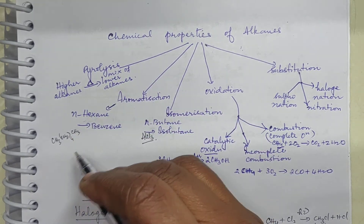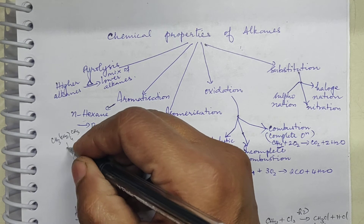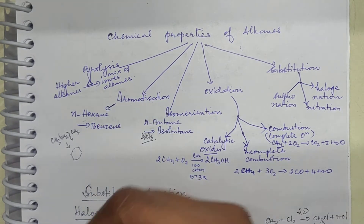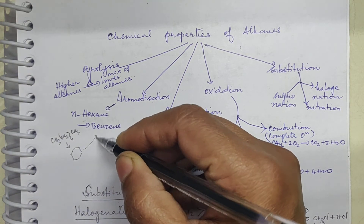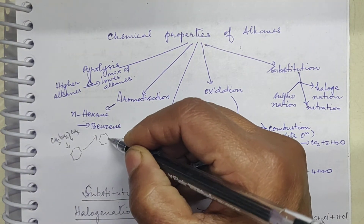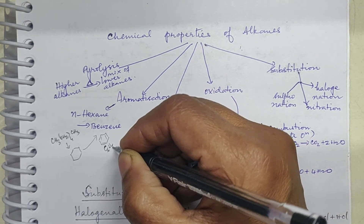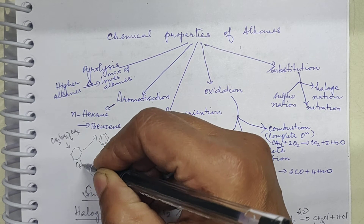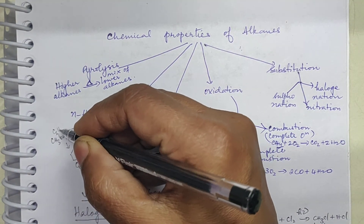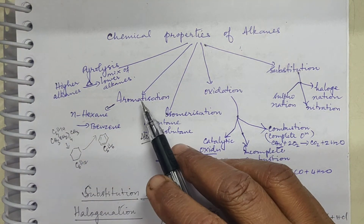Aromatization: n-hexane (CH3-(CH2)4-CH3, six carbon atoms) is first converted into cyclohexane (C6H12), and then cyclohexane is converted into benzene (C6H6). A simple alkane is converted into an aromatic compound — this is called aromatization.